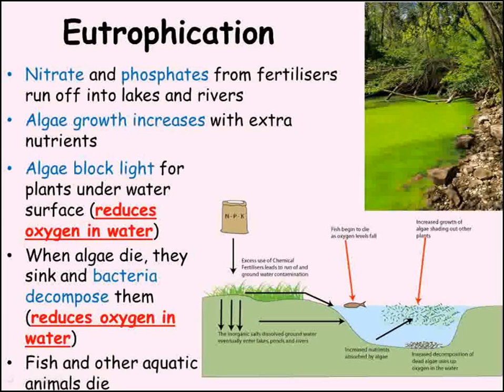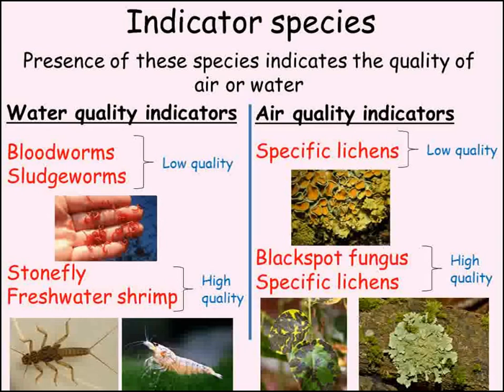Monitoring pollution can be done through the chemical analysis of air or water. It can also be done by observing whether a particular species is living in an area or not. These are known as indicator species, as they indicate the presence or absence of a particular pollutant. For example, heavily polluted water tends to be very low in oxygen. Bloodworms and sludgeworms can survive in these conditions; their presence indicates the water quality is low. In contrast, stonefly and freshwater shrimps can only survive in water that's not polluted, so their presence is a clear indication of good water quality.